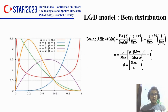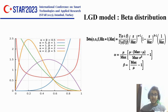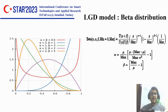The LGD model based on a beta distribution is an approach that models LGD using a beta distribution to represent the variability of losses in the event of default. It helps to better understand and estimate the distribution of potential losses after default, taking into account various parameters such as the amount recoverable and the diversity of losses associated with assets.